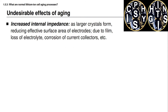It's helpful to understand why cells age and degrade and why they don't last forever. One net result of any of these aging mechanisms is increased internal impedance. As larger crystals form, the effective surface area of the electrode is reduced, increasing impedance. When films form on electrode particles, it's harder for ions to get in and out, so impedance increases. When electrolyte is lost or current collectors are corroded, it makes it harder for electrons or ions to move, resulting in increased impedance or resistance.